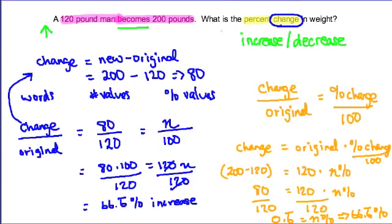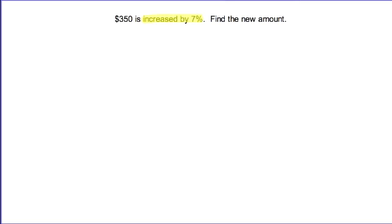So those are two different techniques — one using a proportion and one using an equation. In the second question, we're told that $350 is increased by seven percent. Find the new amount. In this case we're given the percent change — an increase of seven percent — and we're asked to find the new amount.